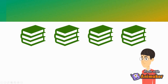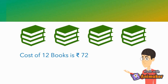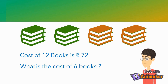Ramesh walks into a shop and he wants to buy some books. He asks the shopkeeper what is the cost of books. The shopkeeper says for 12 books the cost is 72 rupees. But Ramesh wants to buy only 6 books. So, what is the cost of 6 books?